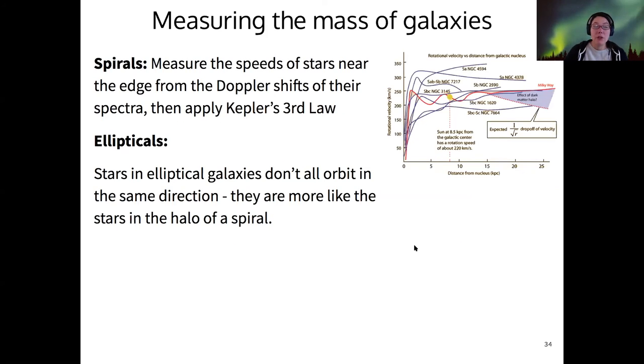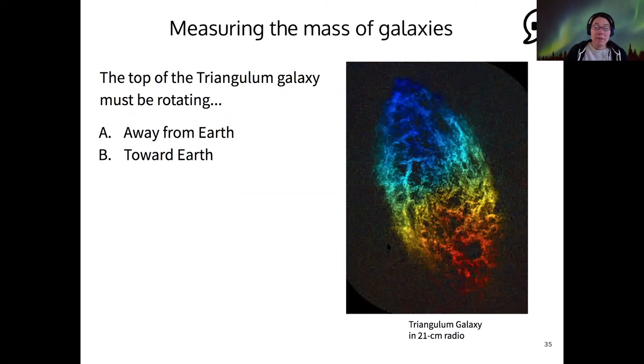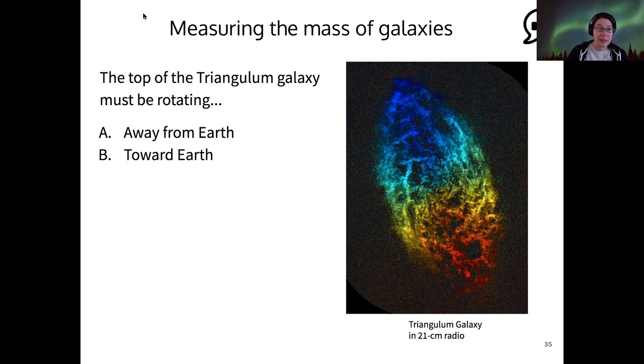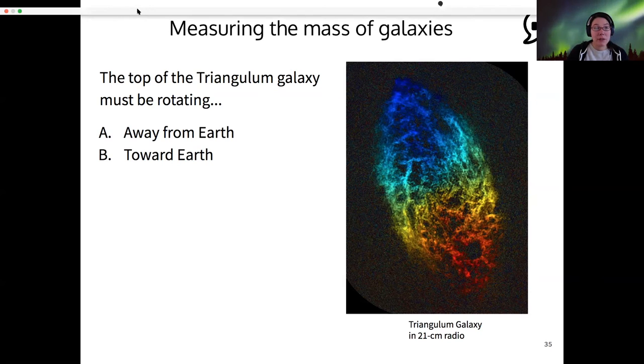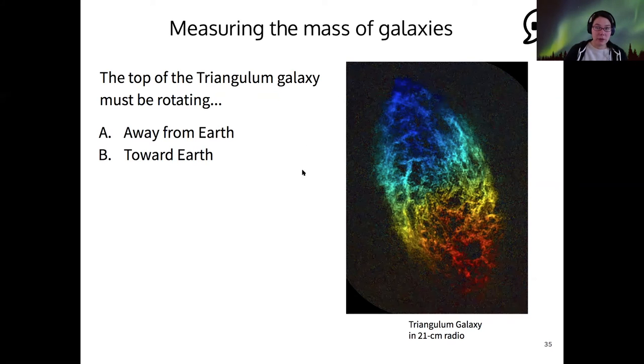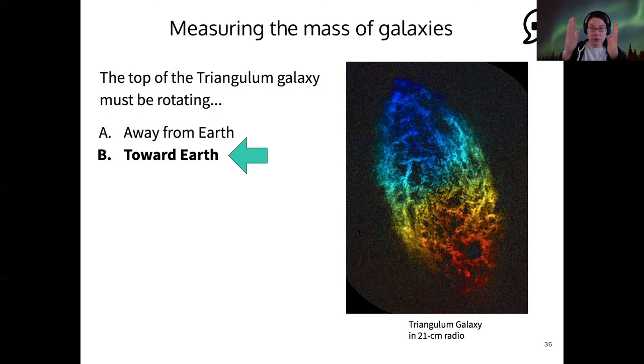So instead, we have to use a slightly different technique, but it's based on essentially the same idea. It's based on actually a Doppler shift. So this is more of a review question, but I'll ask it anyway. Looking at this galaxy, it's mapped in 21 centimeter radiation and the blue shift and red shift are plotted based on color. So what's happening to the top of this galaxy? All right, I see most votes for B that it is moving toward Earth. That's exactly right. It's blue shifting. So the wavelength is getting shorter as the top of the galaxy approaches us. The bottom is moving away. So it's rotating.